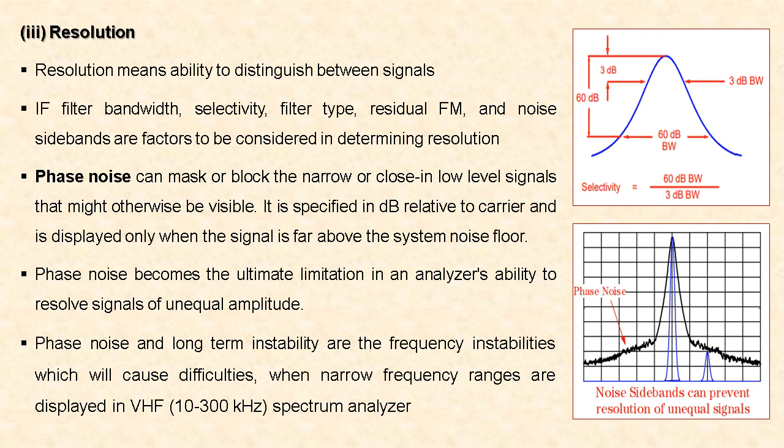Next is resolution — the ability to distinguish between different signals. Factors to be considered include IF filter bandwidth, selectivity, filter type, residual FM, and noise sidebands. Phase noise is an important factor in determining resolution. Phase noise can mask or block narrow low-level signals that might otherwise be visible. It is specified in dB relative to the carrier and is displayed only when the signal is far above the system noise floor. Phase noise is the ultimate limitation in an analyzer's ability to resolve signals of unequal amplitude.